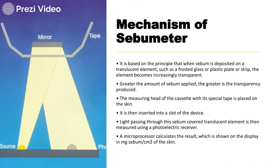The Sebiometer is based on the principle that when sebum is deposited on a translucent element — such as frosted glass, a plastic plate, or a strip — the element becomes increasingly transparent. The greater the amount of sebum applied, the greater the transparency produced. The measuring head of the cassette with its special tape is placed on the skin, then inserted into a slot of the device. Light passes through the sebum-covered translucent element, which is measured using a photoelectric receiver. A microprocessor then calculates the amount of sebum, and the result is displayed in units of milligrams of sebum per centimeter square.